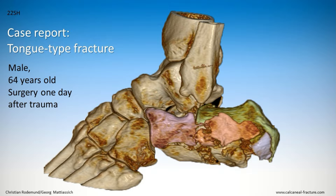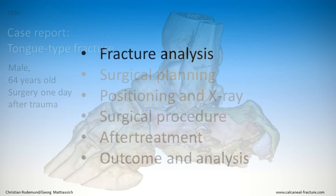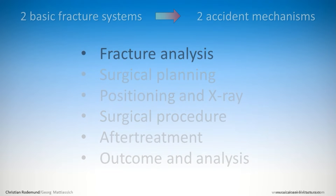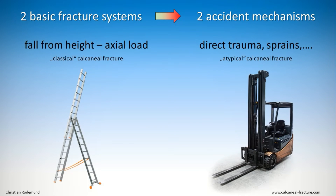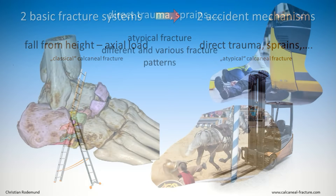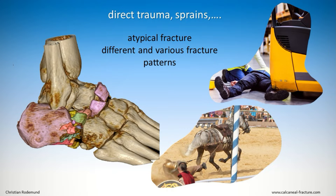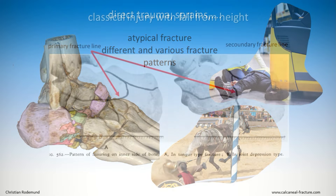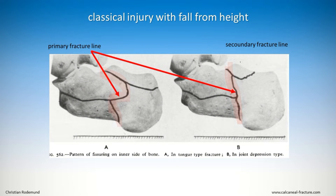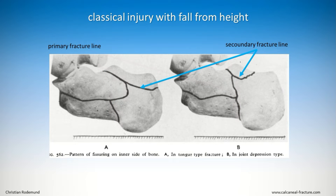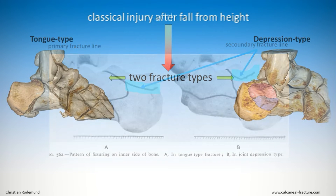For a systematic approach, I categorized fractures into two systems: fall from height, and direct trauma or sprains. For the second group we see different and various fracture patterns. For the first group, Essex-Lopresti identified a central primary fracture line and usually an additional secondary fracture line, dividing fractures into tongue-type and depression-type.